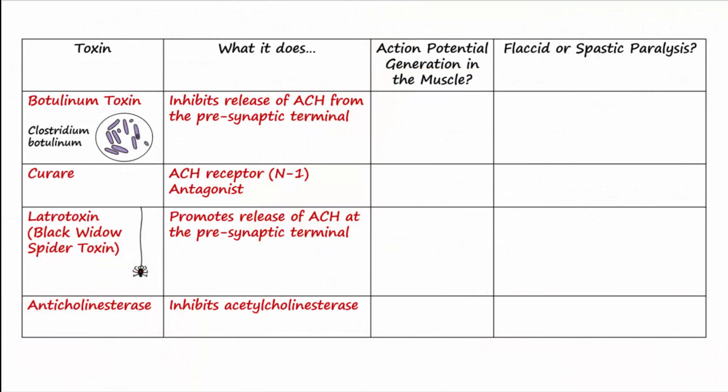This chart shows the action of four different toxins at the neuromuscular junction. Using the information given about each toxin, please attempt to fill in the blanks in the rest of the table. Botulinum toxin affects the neuromuscular junction by inhibiting the release of acetylcholine from the presynaptic terminal. If acetylcholine is not released, the ligand-gated sodium channels on the postsynaptic membrane are not opened, so no action potential occurs in the muscle. The muscle remains relaxed, resulting in flaccid paralysis.